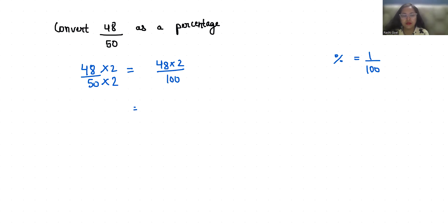Times 1 by 100. I can write this denominator 100. Now this 1 by 100 you can replace with this percentage. So 48 by 50 is equals to 96 percent. I hope the explanation was useful.